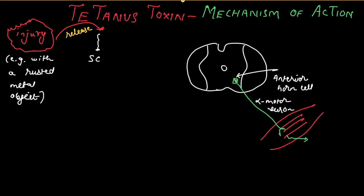The alpha motor neuron is influenced by various higher influences like the cerebral cortex, basal ganglia, cerebellum, vestibular apparatus, and brainstem.